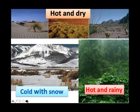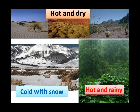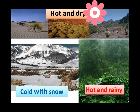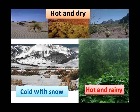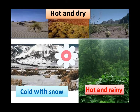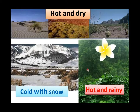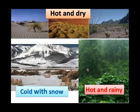Let's look at this slide. You will notice that different parts of the earth can be hot and dry for most parts of the year, while another region can be cold and covered with snow for most parts of the year. Then some regions may be hot and rainy for most parts of the year. Different areas experience different weather or climate conditions.